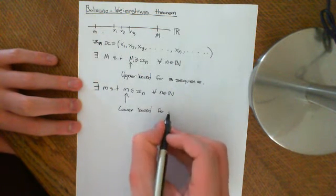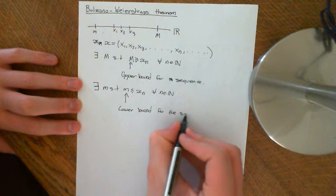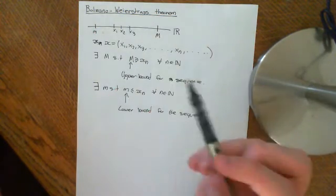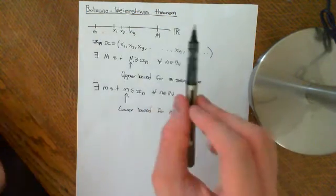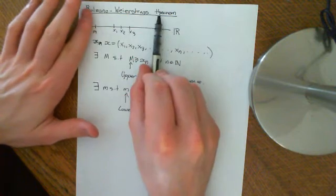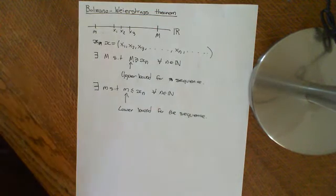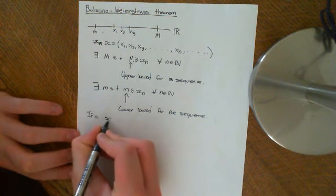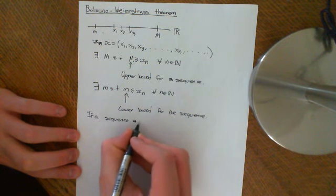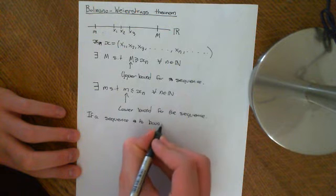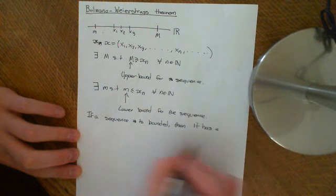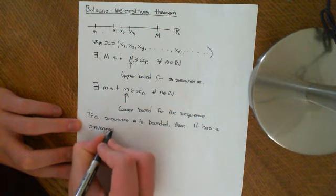If a sequence is bounded, it means that it's bounded above and it's bounded below — there exists an upper bound and there exists a lower bound for the sequence. The sequence is contained within the interval between those two numbers. The Bolzano-Weierstrass theorem says that if a sequence is bounded, then it has a convergent subsequence.